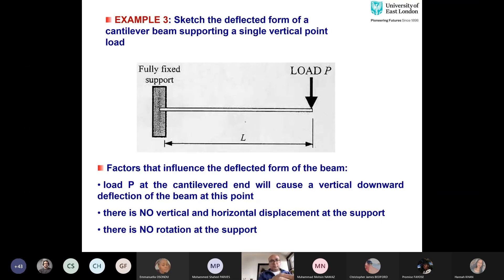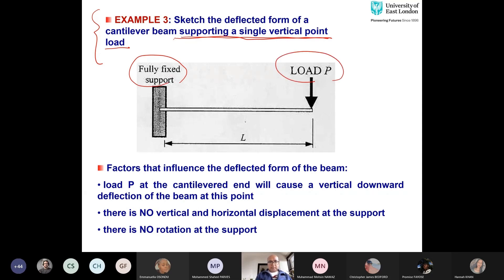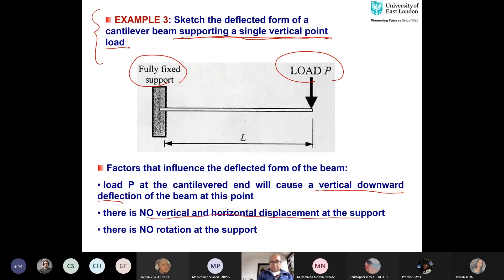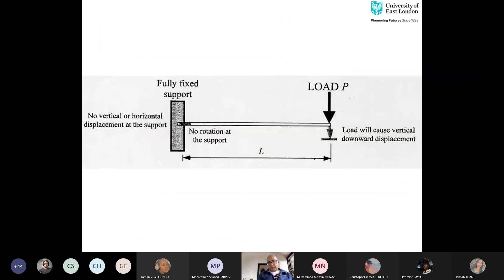Now sketch the deflected shape of a cantilever beam supporting a single vertical point load. The support is fully fixed and the load is applied at the free end. Load P at the cantilever end will cause vertical downward deflection. There is no vertical or horizontal displacement at the fixed support, and there is no rotation there. Simply connect these points — there is no movement on the fixed left side, and the beam curves downward toward the free end.